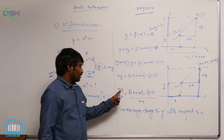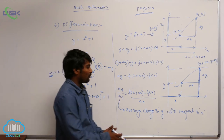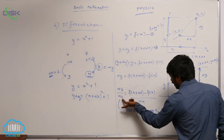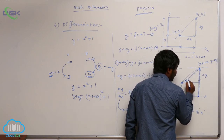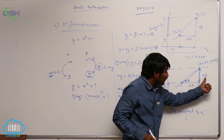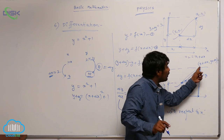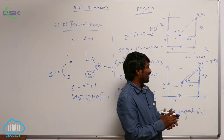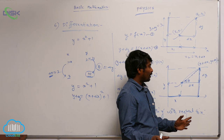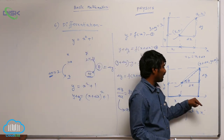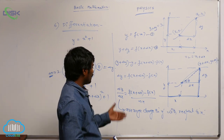So delta y by delta x: when x changes by delta x, y will change by delta y. From the graph, the average change in y with respect to x can be calculated as the slope of the line joining those two points, because tan theta gives the slope. Tan theta equals delta y by delta x. So to calculate the average change in y with respect to x between two points, mathematically we use the formula, and graphically we calculate the slope of the line joining those two points — that is, the tan theta value.